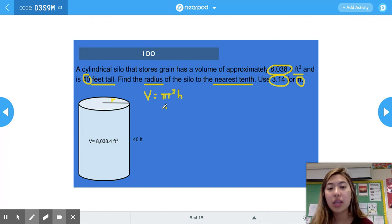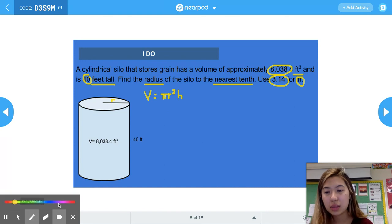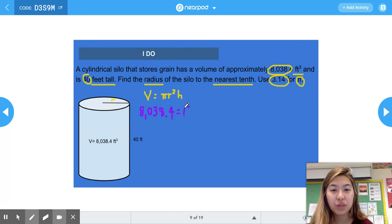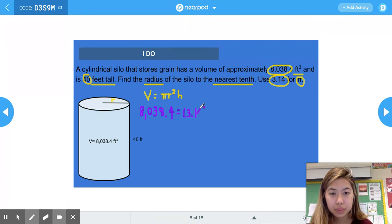Then we're going to plug in the numbers that we know. The volume is 8,038.4, and we use 3.14 for π. We don't know what the radius is, so we're going to keep r². We know that the height is 40.